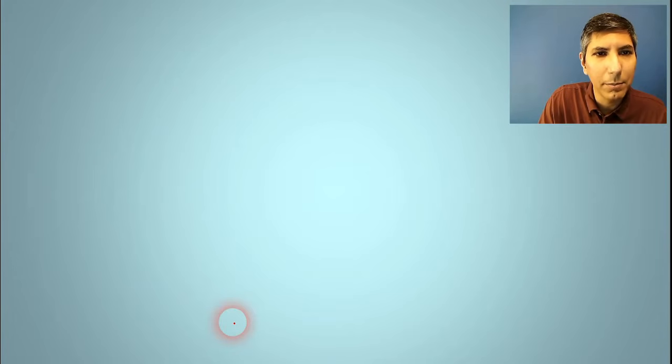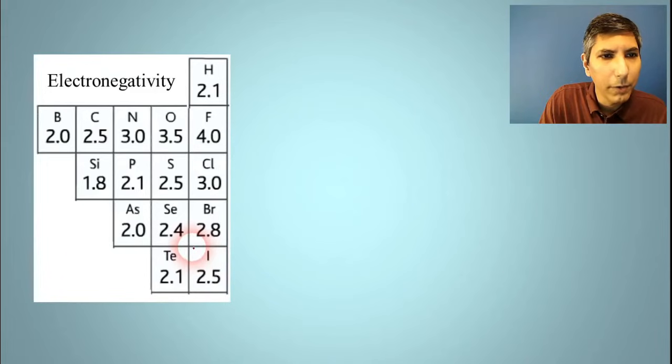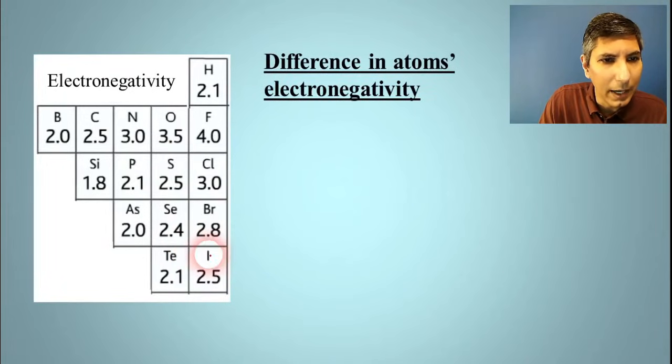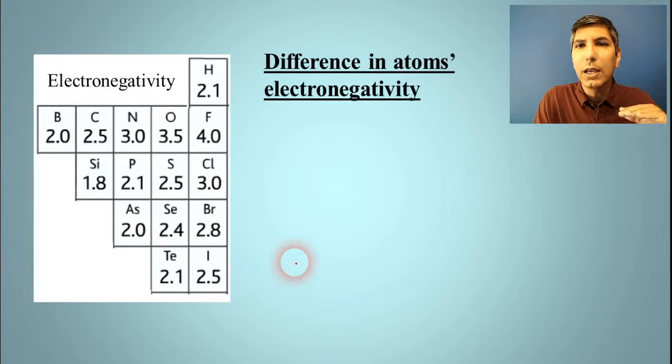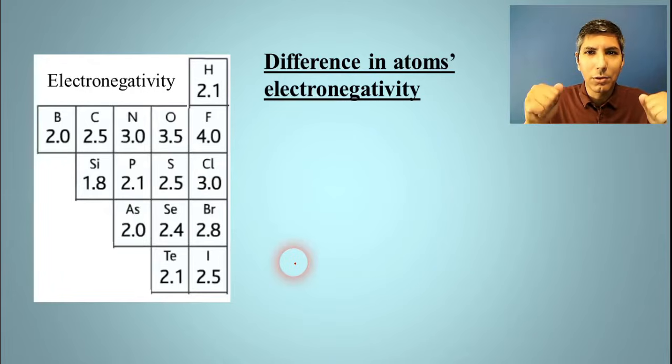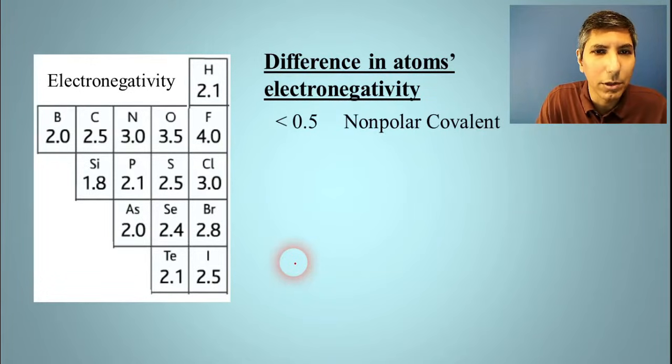So in that other example, let me just pull that up here, we had iodine and sulfur. So if we look at iodine, its electronegativity is about 2.5. Sulfur is 2.5. So they're the same. So that is pretty much a perfectly nonpolar chemical bond. Those two atoms are sharing those electrons equally. 50-50 sharing. If you have a pair of atoms where the difference is less than about 0.5 or so, we can call that nonpolar covalent.